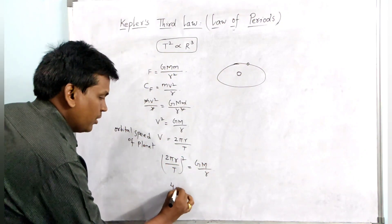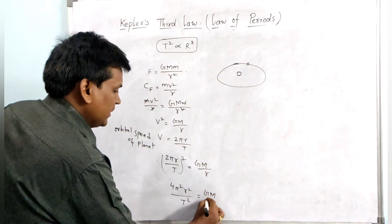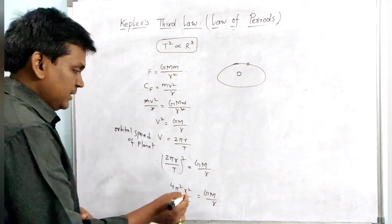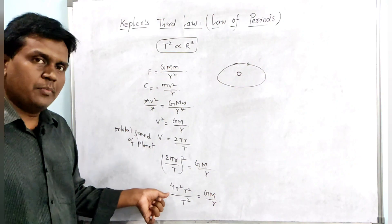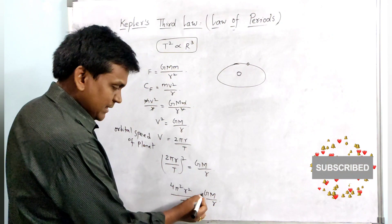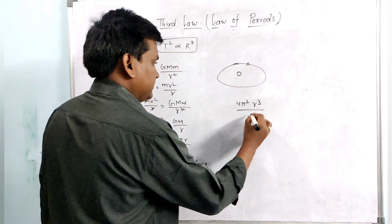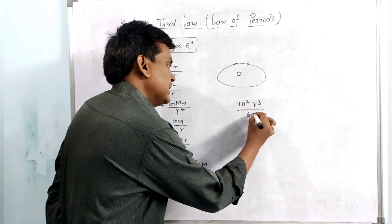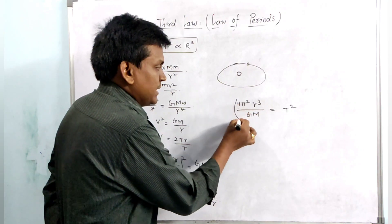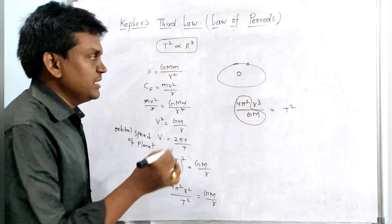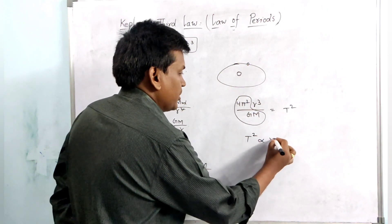Expanding gives us 4·π²·R² divided by T² equals G·M divided by R. Rearranging by bringing R to the other side, we get 4·π²·R³ divided by G·M equals T squared. Since 4·π² divided by G·M is a constant, we can write T squared is directly proportional to R cubed.